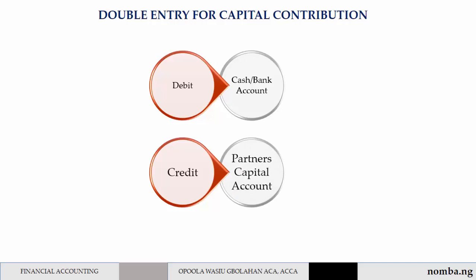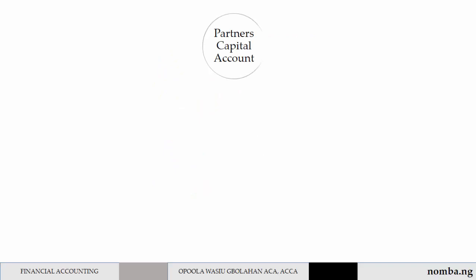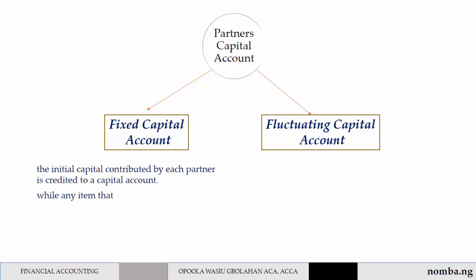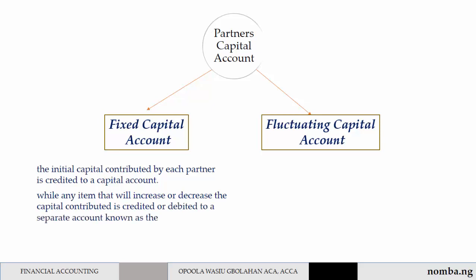However, this partner's capital account — the partnership has a choice of maintaining either a fixed capital account or a fluctuating capital account. Under the fixed capital account, the initial capital contributed by each partner is credited to a capital account, which is fixed, while any item that will increase or decrease the capital contributed is credited or debited to a separate account known as the current account.